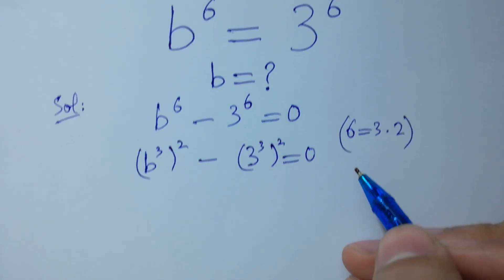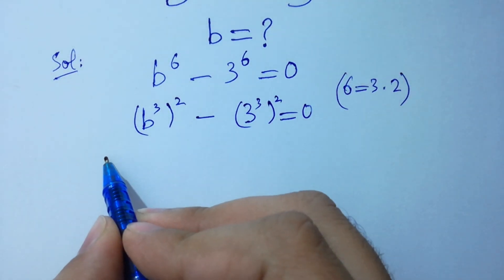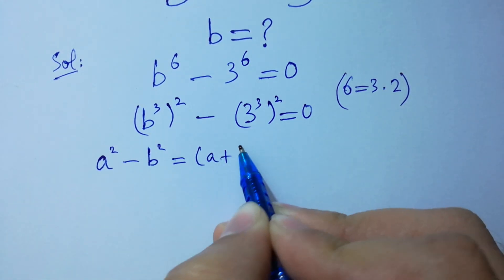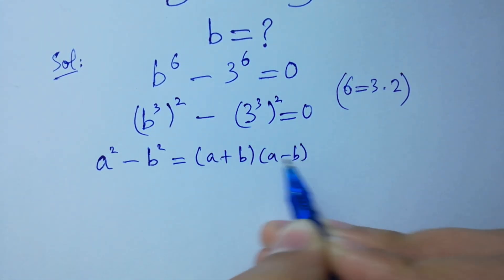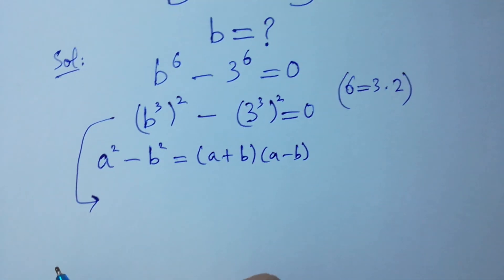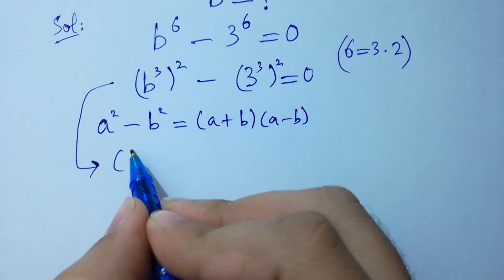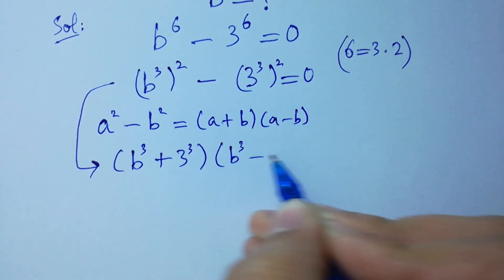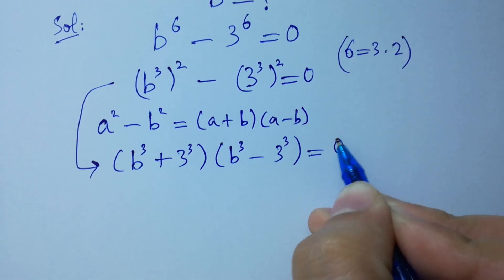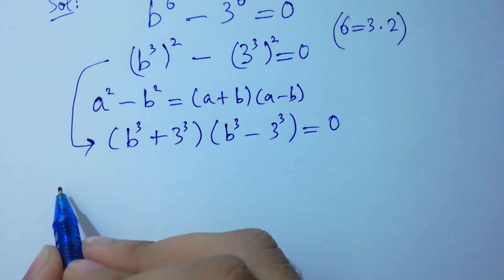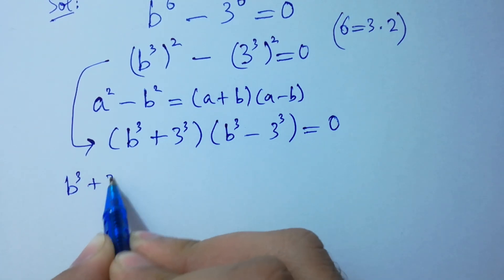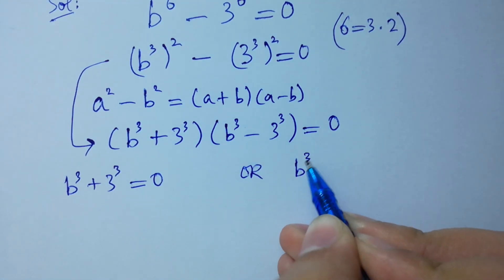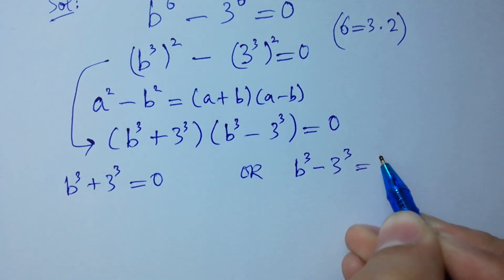As you know, the formula A squared minus B squared equals A plus B times A minus B. So we have B cubed plus 3 cubed times B cubed minus 3 cubed equals 0. Therefore either B cubed plus 3 cubed equals 0, or B cubed minus 3 cubed equals 0.